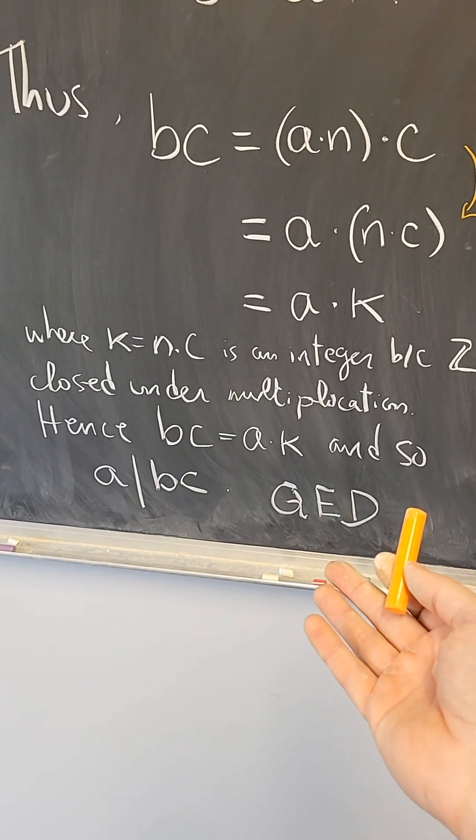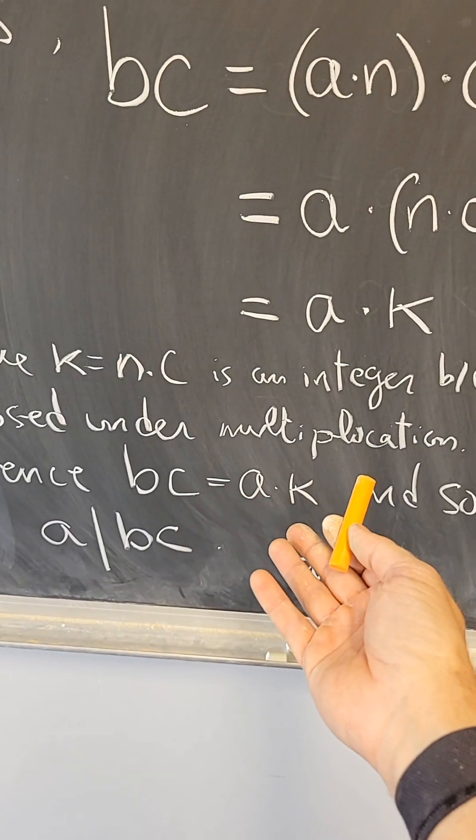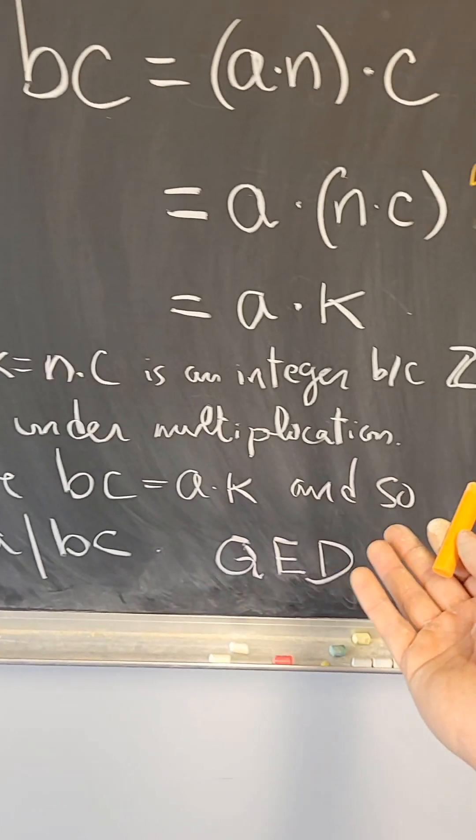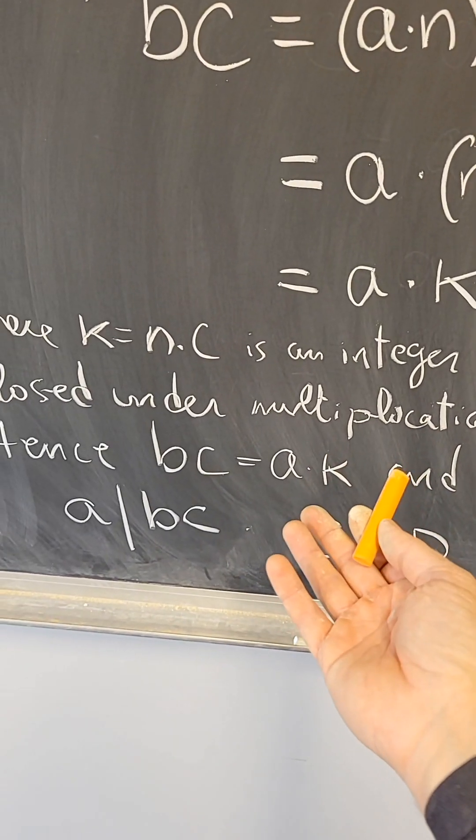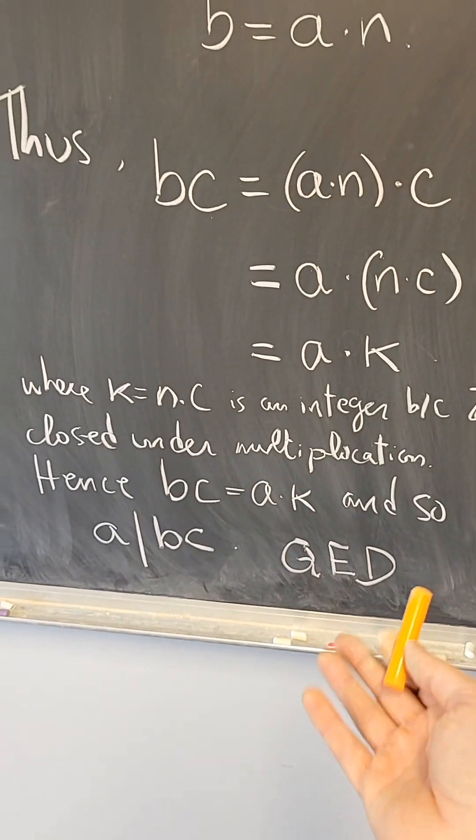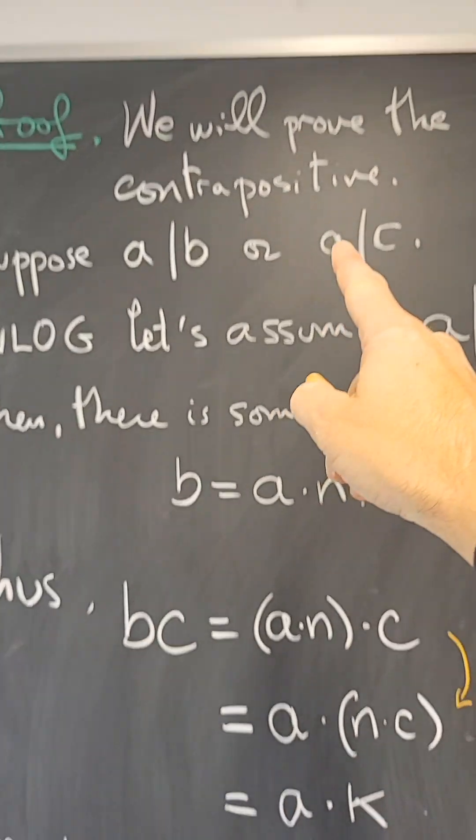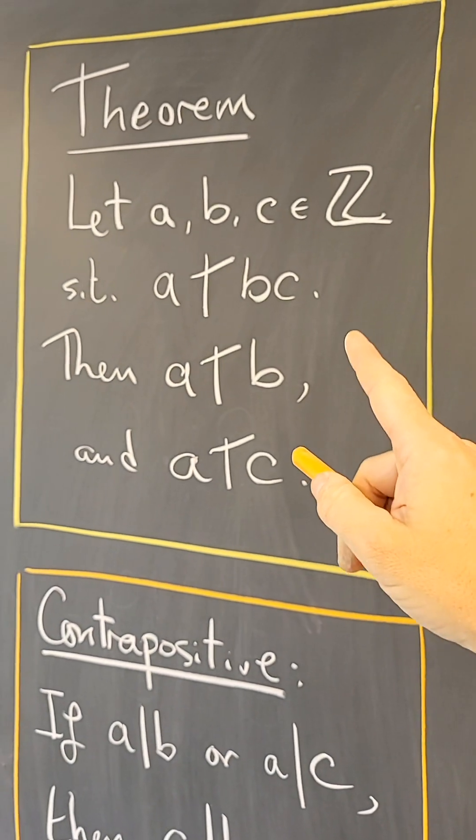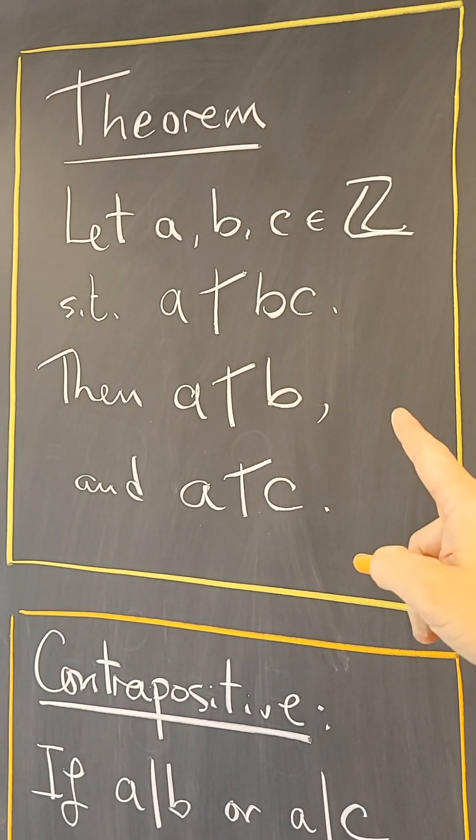So BC is A times K where K is an integer, and therefore by the definition of divisibility, A divides BC as we wanted to prove—to prove the contrapositive of the statement we wanted to prove. So now this one is also proved.